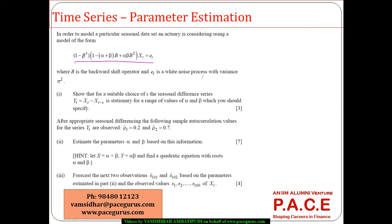1 minus B cubed means it's a 3-period lag that is being considered: Xt minus Xt-3. That 3-period lag is being multiplied by 1 minus alpha plus beta times B, covering a 1-period lag and a 2-period lag.